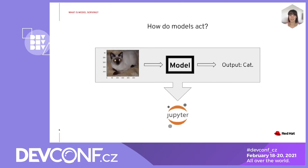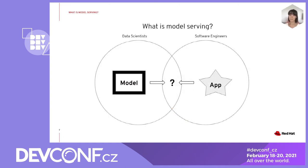What happens after model validation is just the beginning of the model performing in the real world. For a long time, data scientists have been able to build models in isolated Jupyter notebooks. We're moving beyond this — moving beyond just throwing models to engineers and saying, 'OK, have fun deploying this, figure it out.' And then weeks or months later, something breaks. The issue can often be difficult to diagnose because it's at an overlap of the necessary knowledge of a data scientist and a software engineer, and it's difficult to find people with all of those different tools.